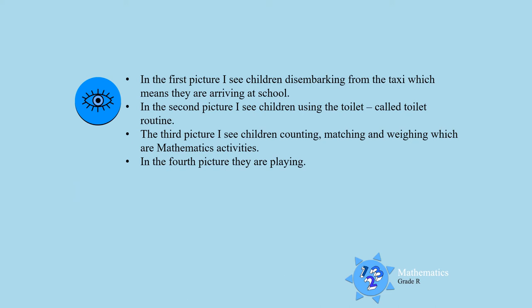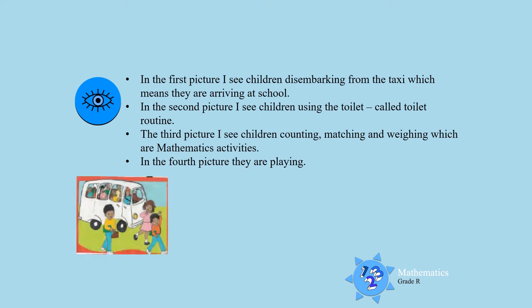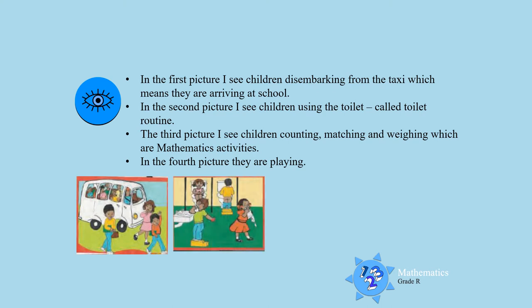Let's see boys and girls. In the first picture, there are children getting out of the taxi, which means they are coming to school — they are arriving at school. In the second picture, children are using the toilet, and in Grade R we call that toilet routine.